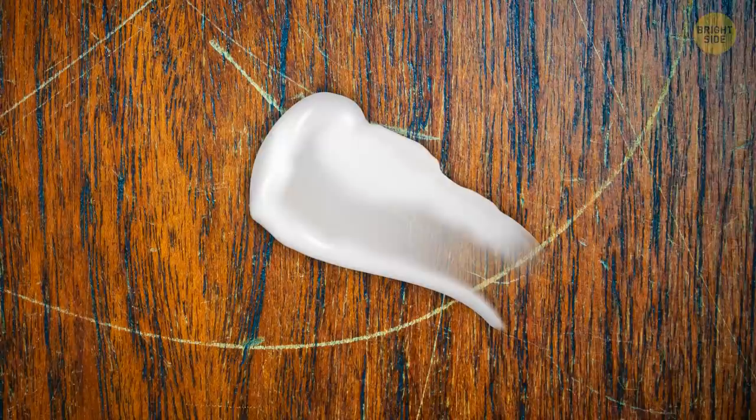Try using toothpaste to remove small scratches on furniture. Rub a peanut-sized amount on the scratch in a circular motion until the scratch buffs out. Then wipe it with a damp cloth, and voila!